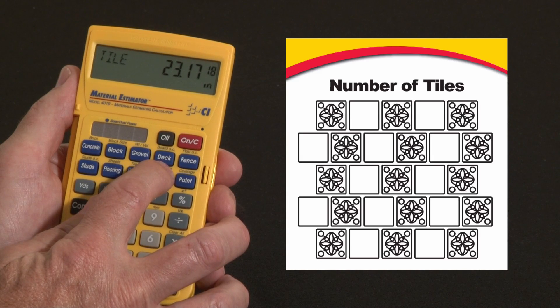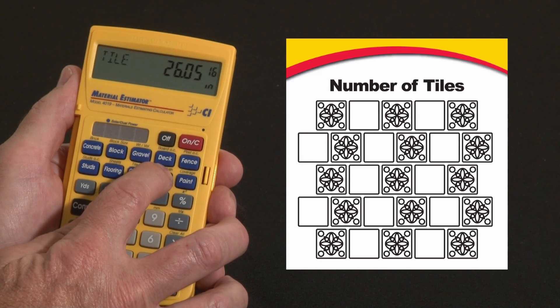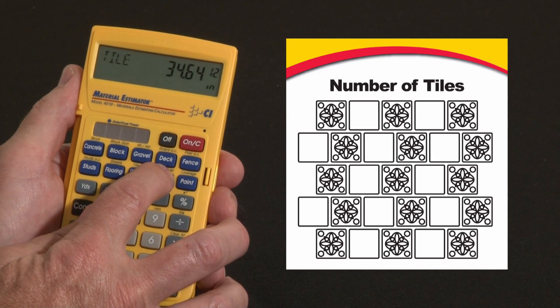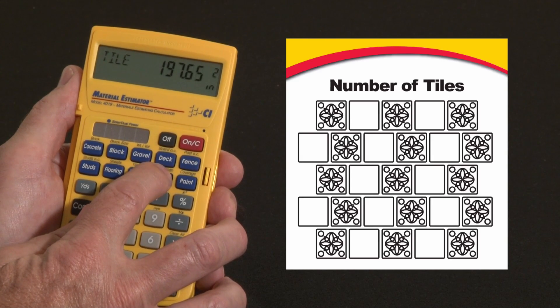For 18-inch square tiles I need 23 of them, for 16-inch I need 26 of them, for 13-inch I need 32, and so on down the line, all the way down to one-inch tile sizes.